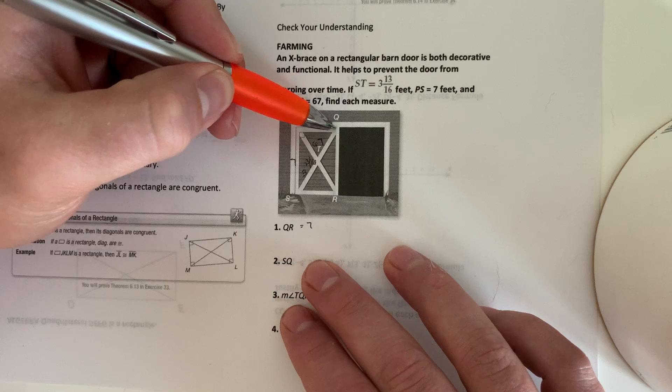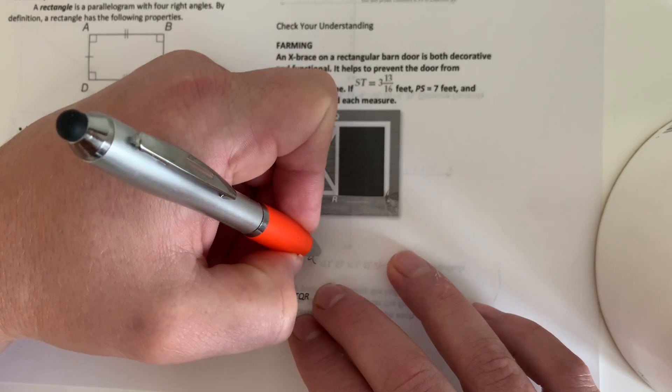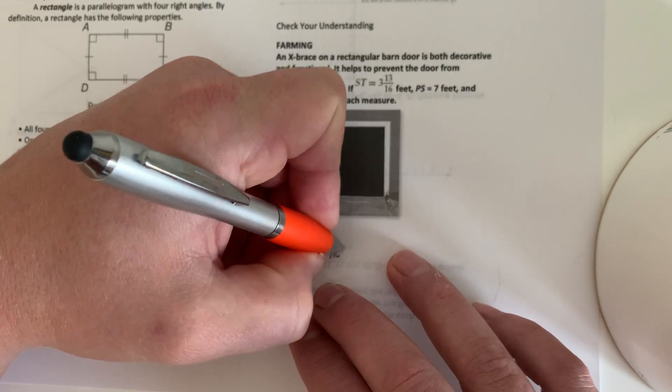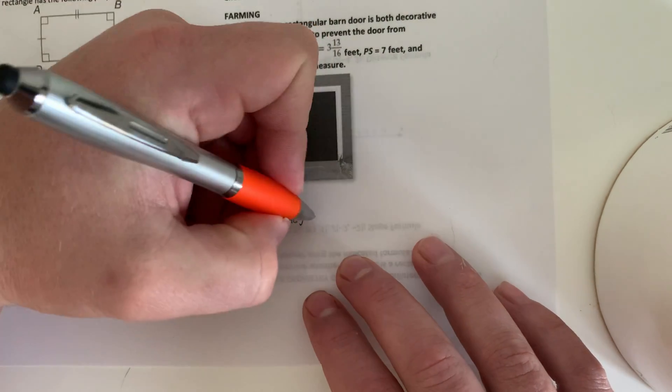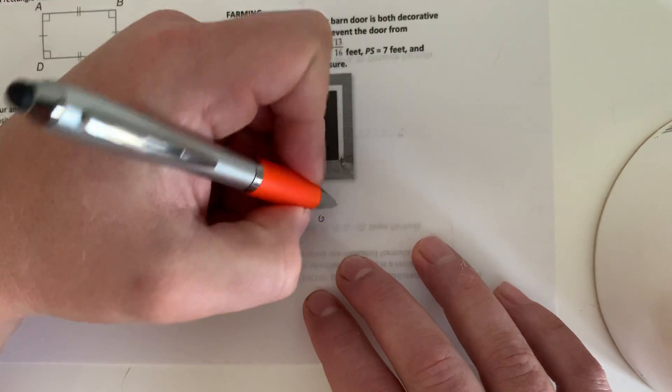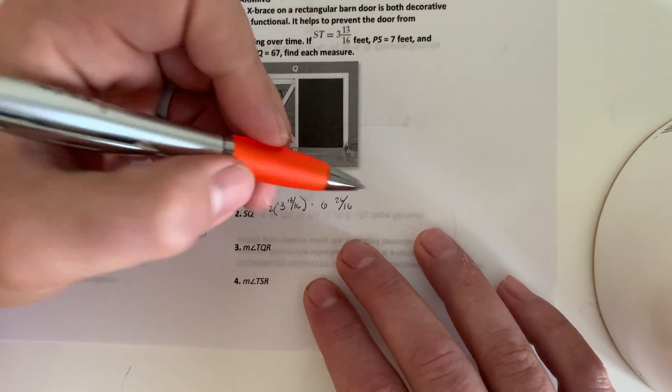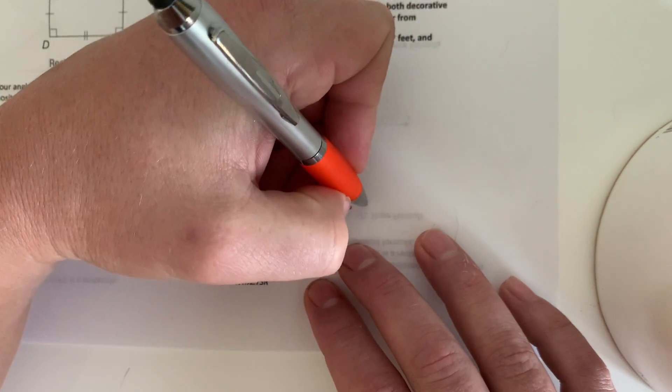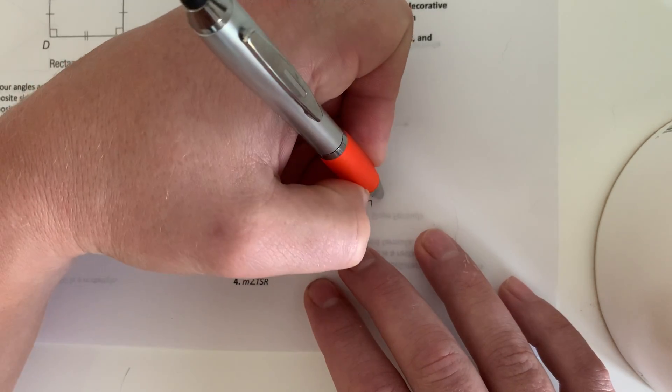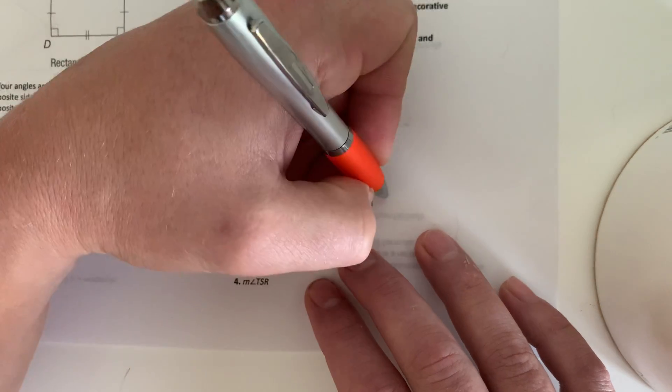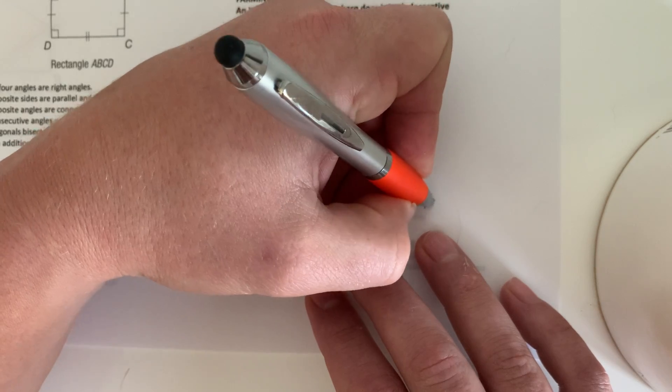SQ is this whole length. And they gave us ST is 3 and 13 sixteenths. So we need to do 2 times 3, 13 sixteenths. And doing that by hand, we would just do 2 times 3, which is 6. And 2 times 13, which is 26. And then it would be over 16 still. So 26 over 16 can be reduced to 1. So we add that 1 to the 6, so to make it 7. And then the left over would be 26 minus 16, which is 10 over 16. So that would be reduced to 7 and 5 eighths.